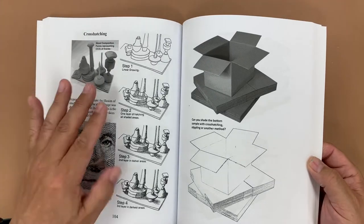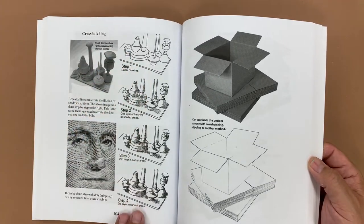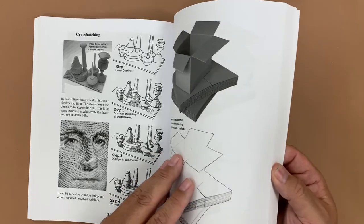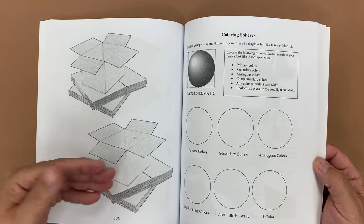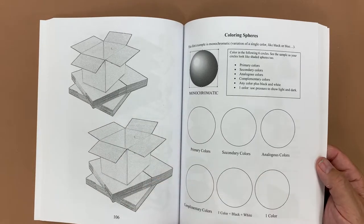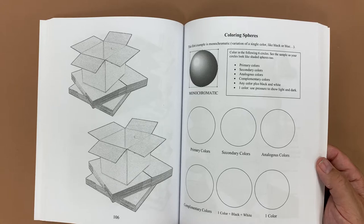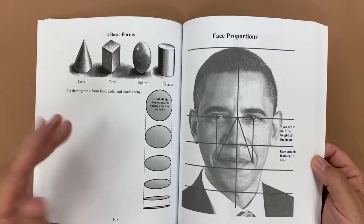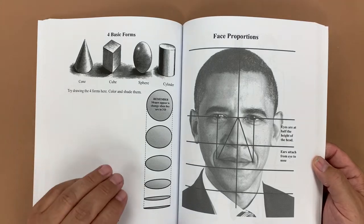Then we have cross-hatching so they understand kind of what is expected of that, and then they can practice the cross-hatching on another page. Stippling, maybe scribbling, coloring spheres, exercise in primary, secondary, analogous, complementary colors, and monochromatic colors. Again, more forms for just kind of practicing our skills.